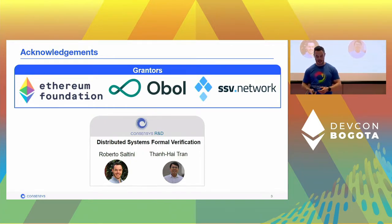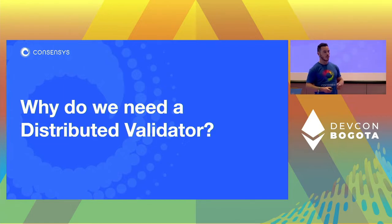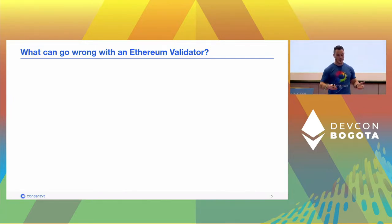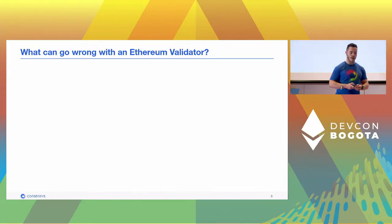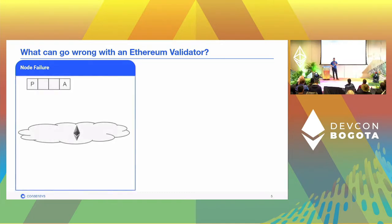Now I can start answering the first question: why do we need a distributed validator? If you were here before for the talk by Colin and Oisin, you may already know, but I'll briefly go over it by answering another question: what can go wrong with an Ethereum validator? Well, there are at least two things. The first one is that your Ethereum validator may fail.